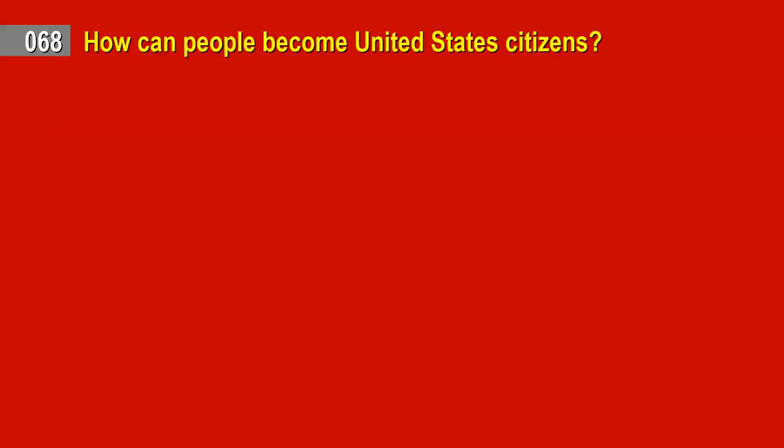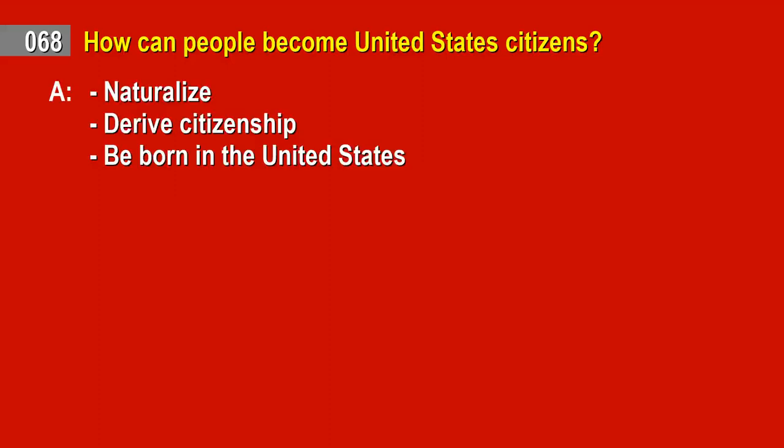Question 68. How can people become United States citizens? Answer: Naturalize. Derive citizenship. Be born in the United States.